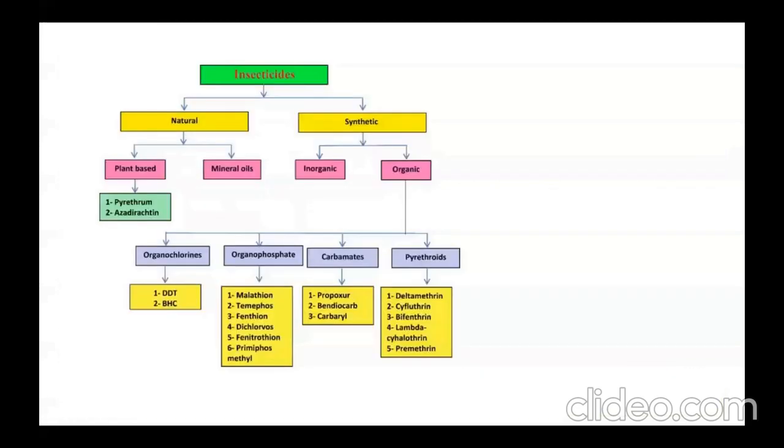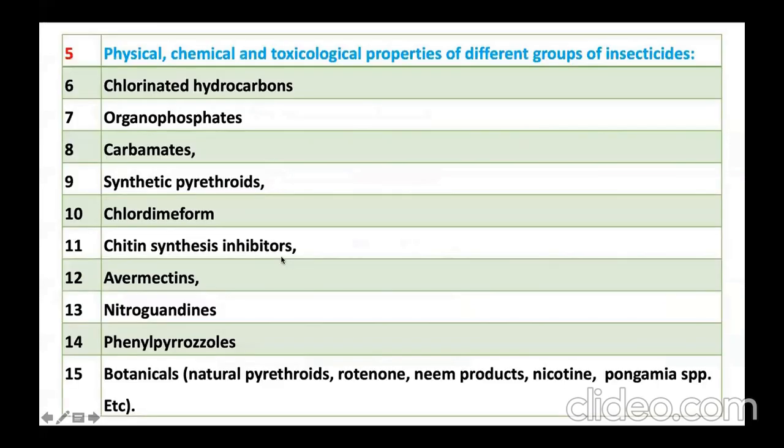You should know which insecticide belongs to which group. Like if we say carbaryl, it belongs to carbamate. They used to ask simple examples, like they will ask dichlorvos, which belongs to organophosphate. Likewise, you need to remember.